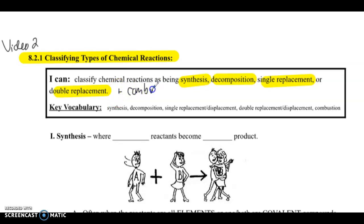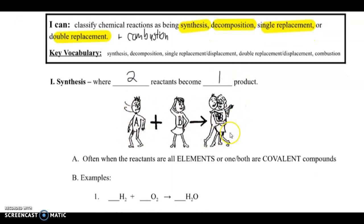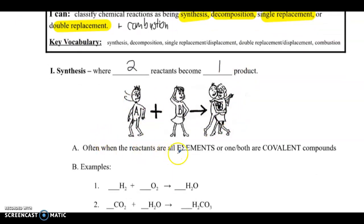There are more than these few types of reactions. You'll learn more about them if you take AP chem. So let's start with our synthesis reaction. A synthesis reaction is where two reactants become one product, where two individuals become one new thing. Often when the reactants are all elements or one or both are covalent compounds, you will get this synthesis reaction.